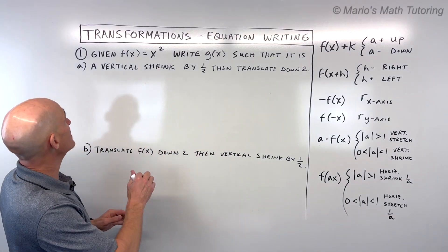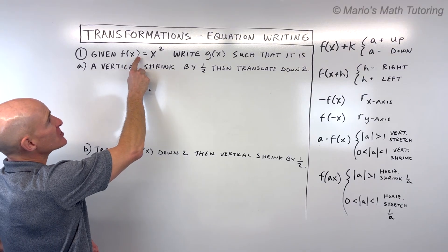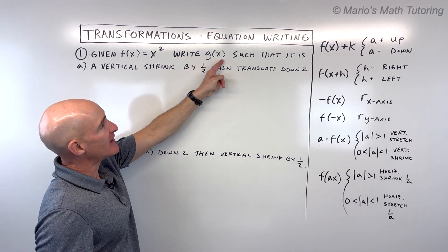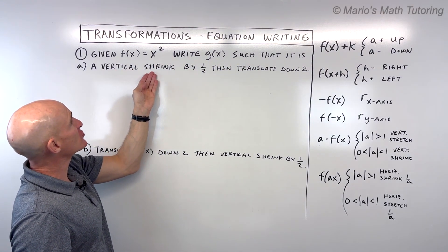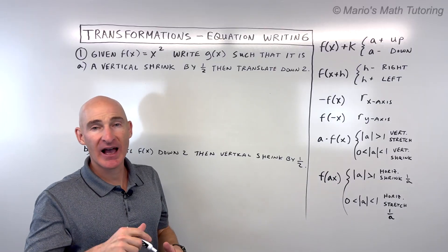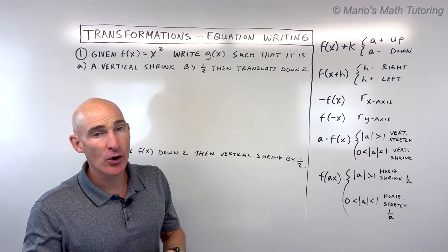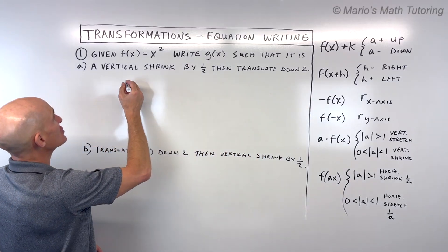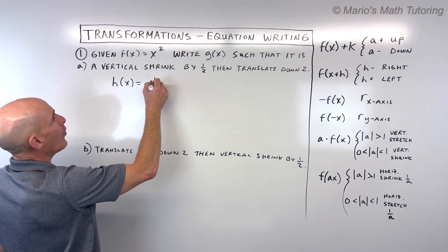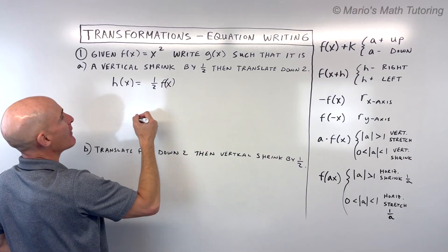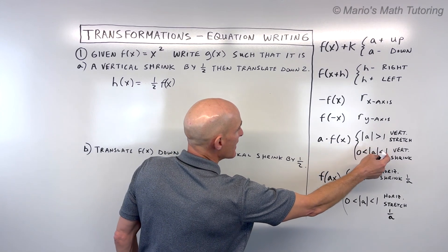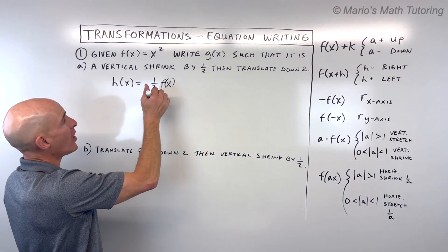Let's dive into the examples. Number one: given the parent function f of x equals x squared — which we know is a parabola, that u-shaped graph — we're going to write g of x such that it is a vertical shrink by a half, then it translates down two. Some students like to dive right in, but you might want to take it slowly using this function notation. So we might say h of x equals one half times f of x. That's the a value times f of x, which gives a vertical shrink since a is between zero and one.